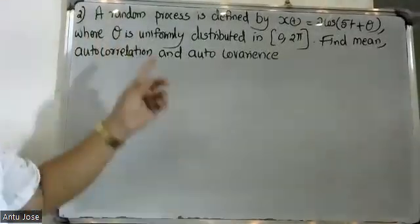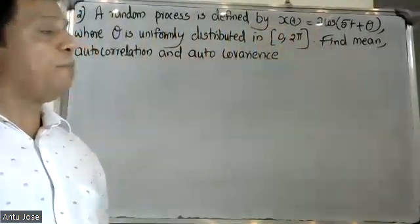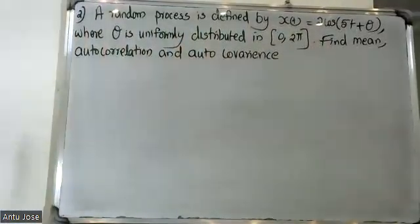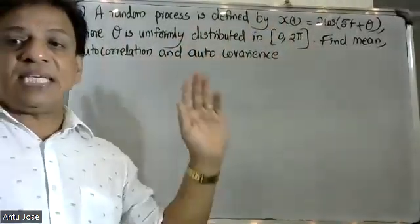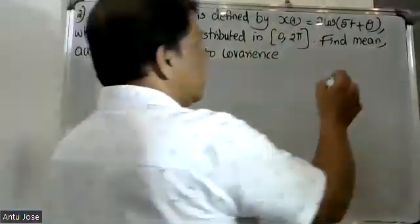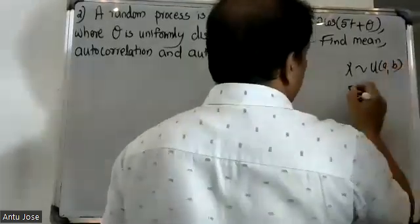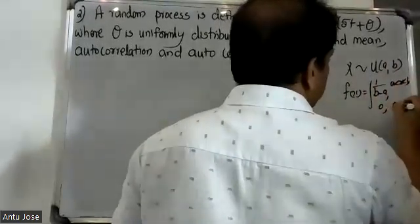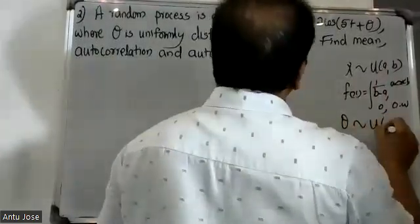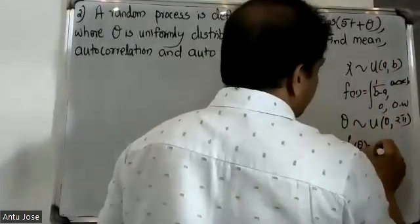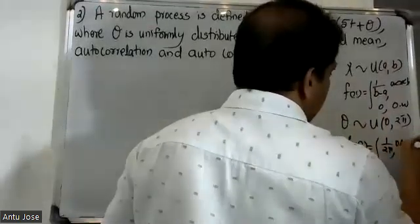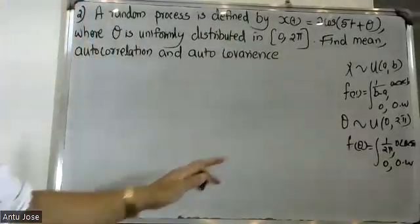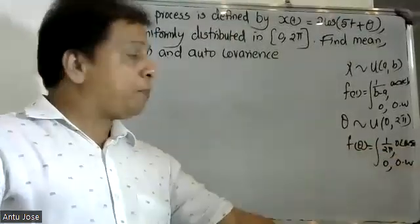Good morning students. The question is: a random process is defined by x(t) = 2cos(5t + θ), where θ is uniformly distributed from 0 to 2π. Find the mean, autocorrelation, and autocovariance. x(t) = 2cos(5t + θ), θ follows uniform distribution. The probability density function f(θ) = 1/(2π) for 0 < θ < 2π, and 0 otherwise.